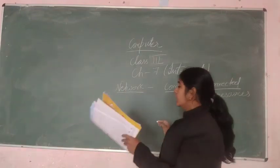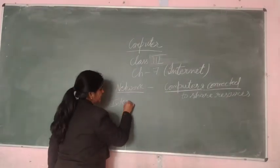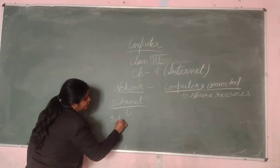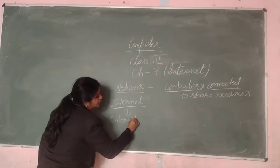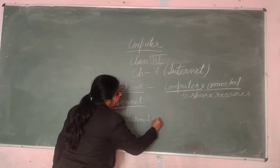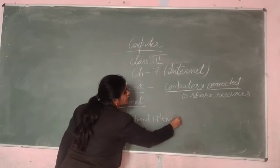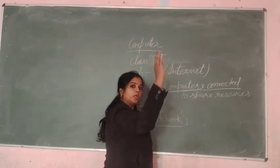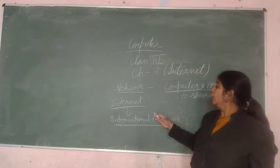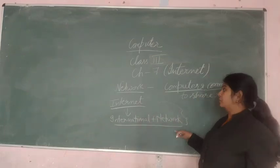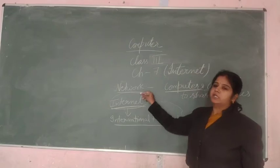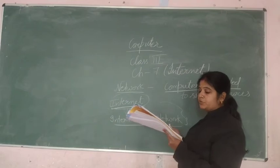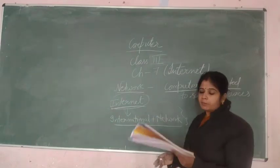The second word is internet. The word internet is made up of two words: international and network. It means computers which are connected all over the world, connected in an international network — globally connected. Globally connected computers are called internet. The definition: a global wide area network that connects computer systems across the world.